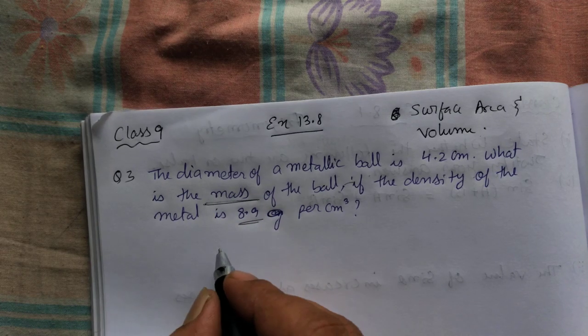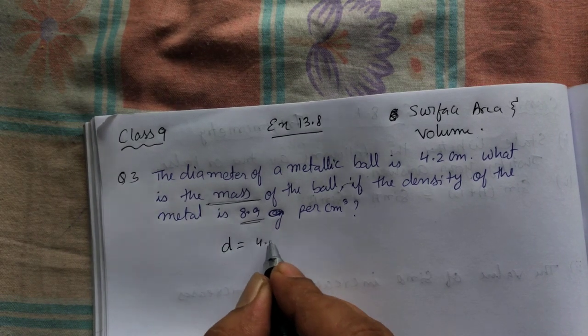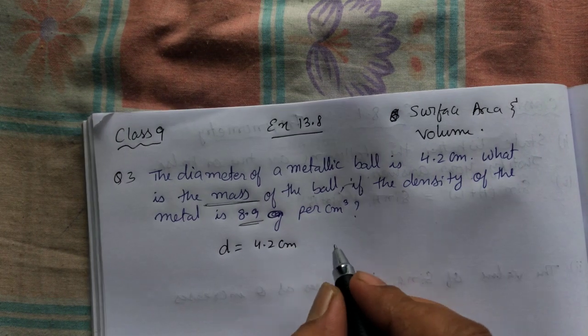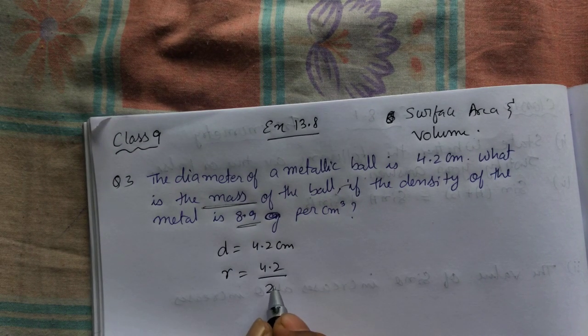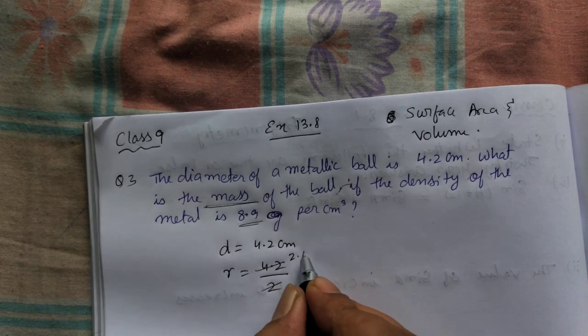So they have given the diameter as 4.2 centimeters. If you see the diameter, to make radius you divide 4.2 by 2, which becomes 2.1.